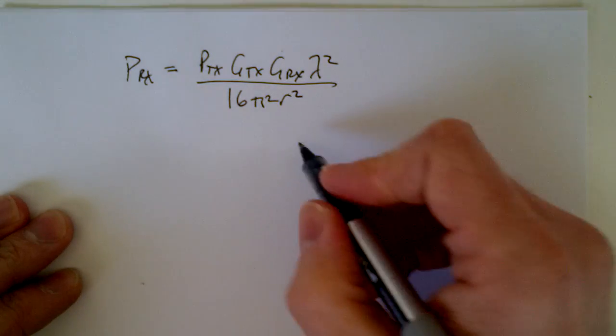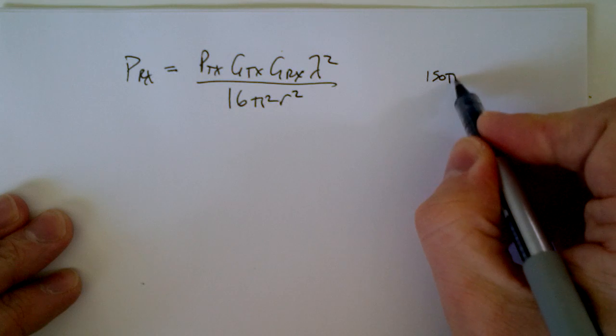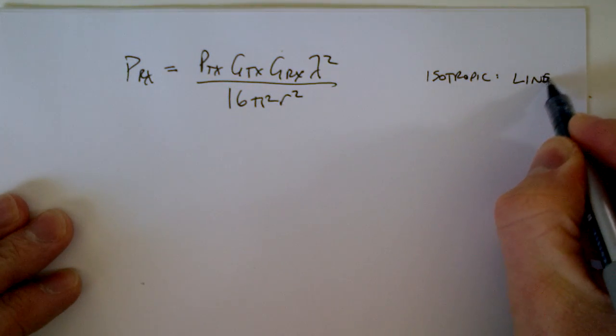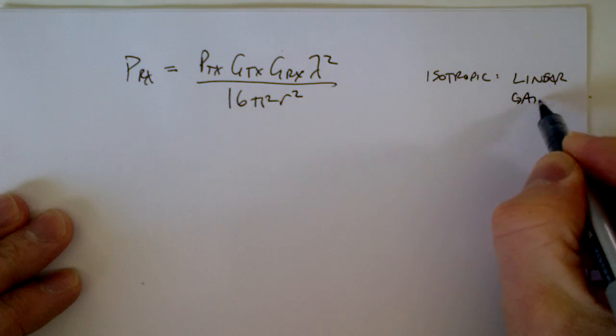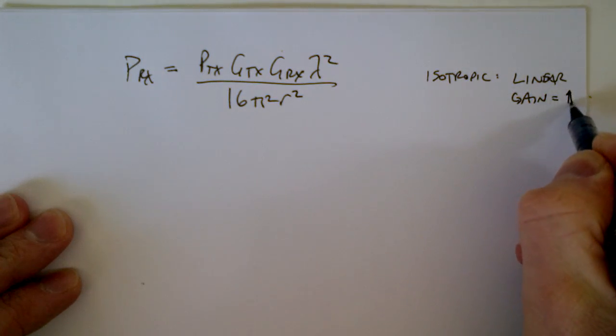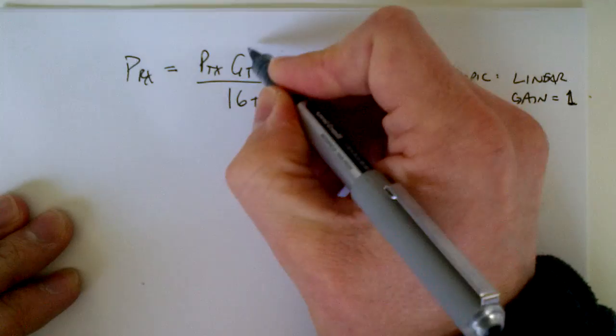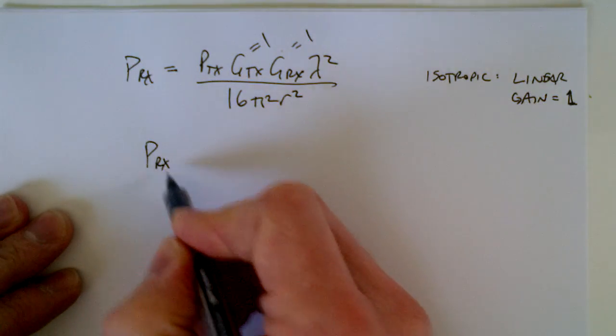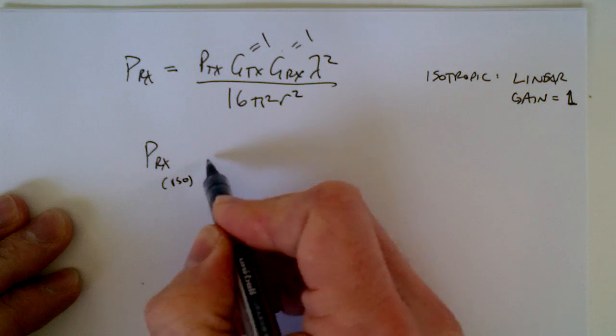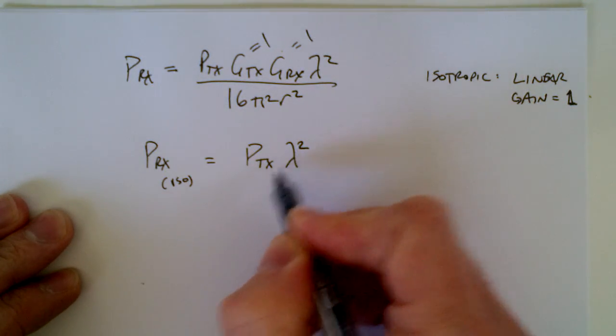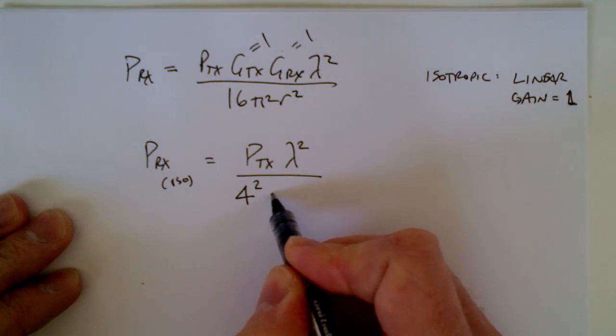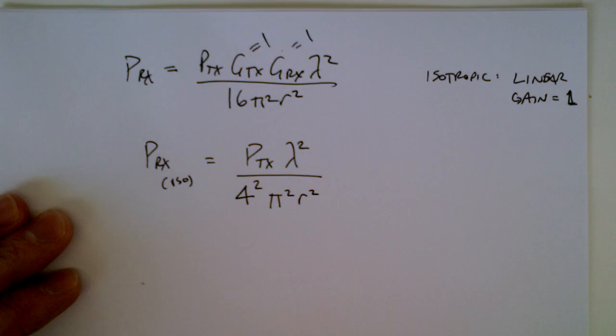Well, for isotropic antennas, what that means is the linear gain is equal to one, unity gain. So this is equal to one, this is equal to one. So that means receive power for isotropic would be transmit power times lambda squared over 16, which is 4 squared, pi squared, r squared, like that.